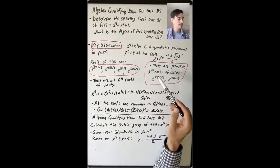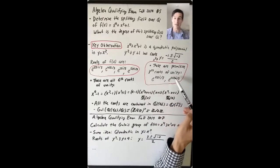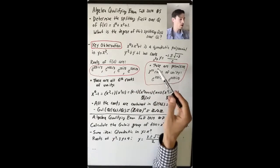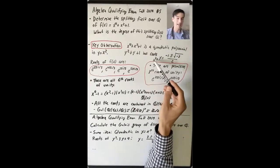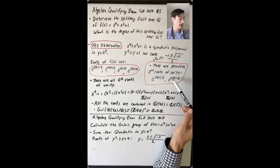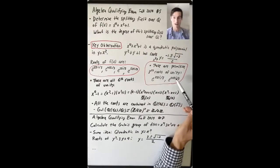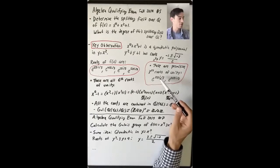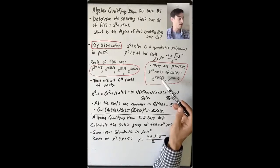You can think of them as e^(2πi/3) and e^(4πi/3). It's easier to think about this way because now I'm looking for things that square to e^(2πi/3) and e^(4πi/3). One thing that squares to e^(2πi/3) is e^(πi/3).